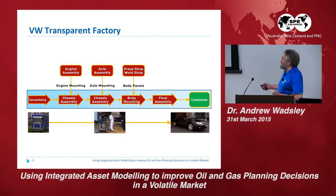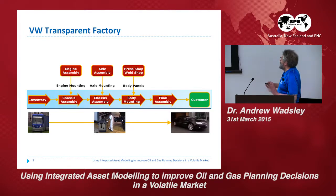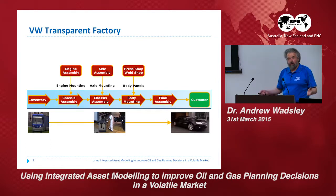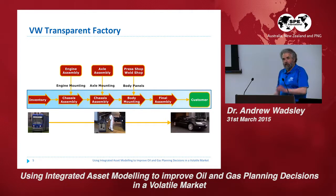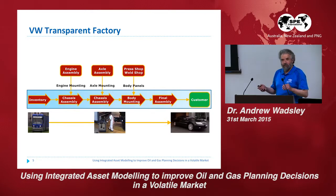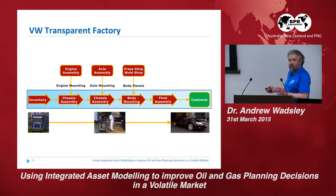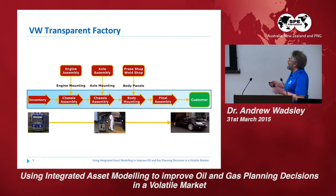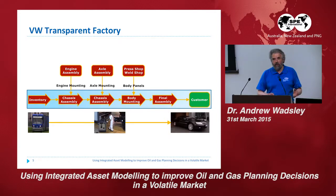This is not an automatic factory — if you want to see a robotic factory, go look at Honda; you'll see nothing but robots. The VW factory involves real people, very skilled people, doing very skilled assembly for top-of-the-line quality vehicles. What I'm going to talk about is how we translate this assembly line approach into integrated asset modelling.